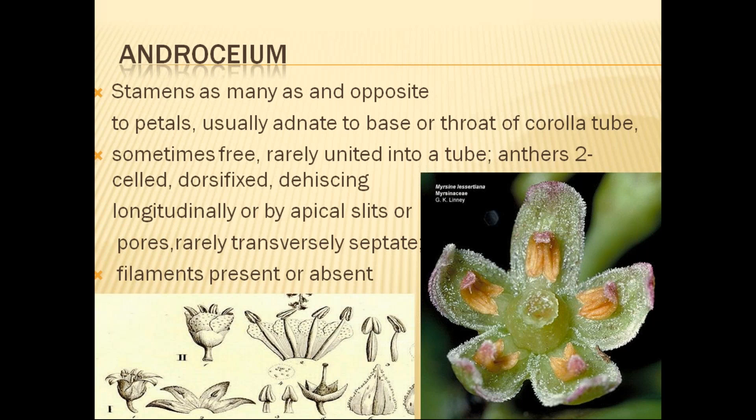The petals are sometimes free, rarely united in a tube. The anthers are free, two-celled, and dorsifixed, meaning the filament is attached at the back of the anther. Dehiscence is longitudinal, with slits or apical pores, rarely transversely septate. A filament is present; sometimes it may be absent. That is one of the particular characteristics of this family.